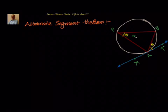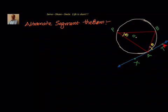As part of circles in 9th or 10th class syllabus, the Alternate Segment Theorem says that the angle between the chord and the tangent is equal to the angle made by the chord in the alternate segment. That is, angle BAT is equal to angle BPA.